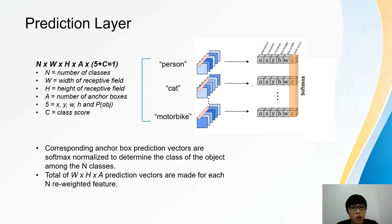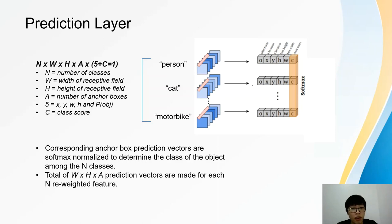Next, let's look at how the predictions layer works under this framework. The dimensions of the reweighted features are n × w × h × a × (5 + c), where n is the number of reweighted features, which also represents the number of classes for detection. w and h are the width and height of the receptive field of the reweighted features. a represents the number of anchor boxes in each grid cell for object detection. 5 represents the bounding box parameters and objectness score. Lastly, c represents the class score.